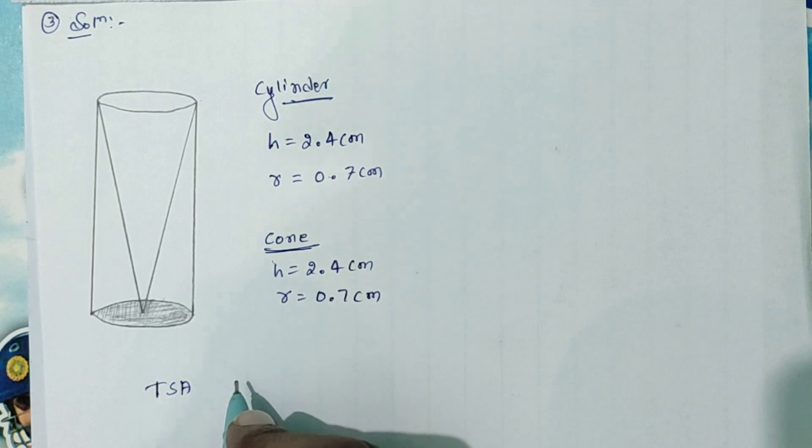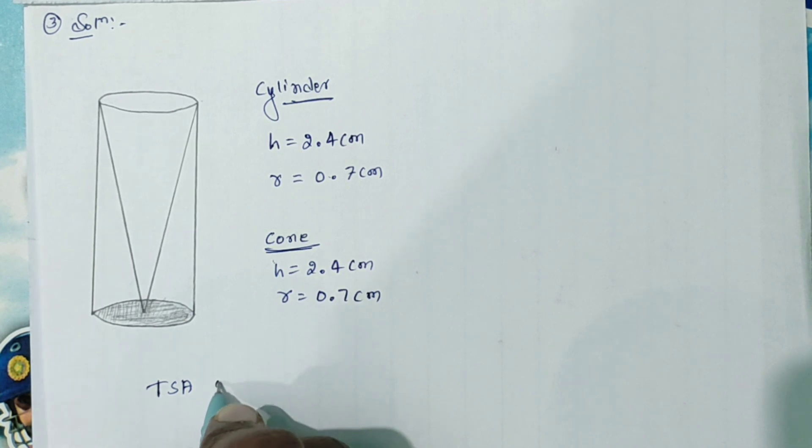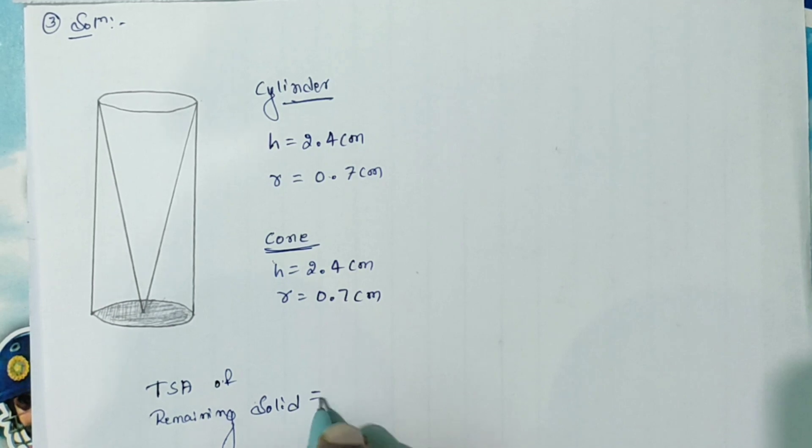Total surface area is equal to total surface area of remaining solid. Remaining solid is equal to CSA of cone.